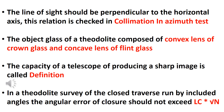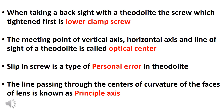When taking a back sight with a theodolite, the screw which is tightened first is the lower clamp screw. The theodolite has a lower clamp screw and an upper clamp screw. When taking a back sight, we use the lower clamp screw first.